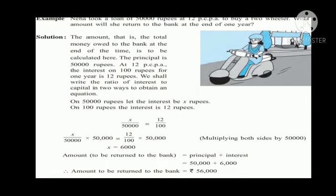Using the formula: Amount = Principal + Interest, the principal was 50,000 plus interest of 6,000. Therefore, the amount to be returned to the bank is rupees 56,000. After one year, Neha will return 56,000 rupees with interest to the bank. This is how we find the total amount.